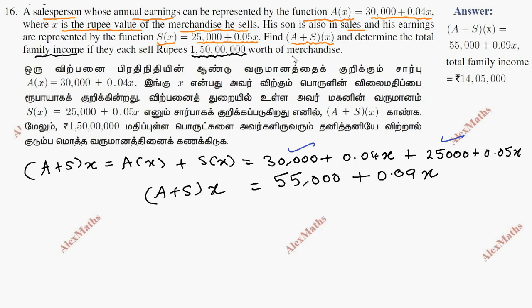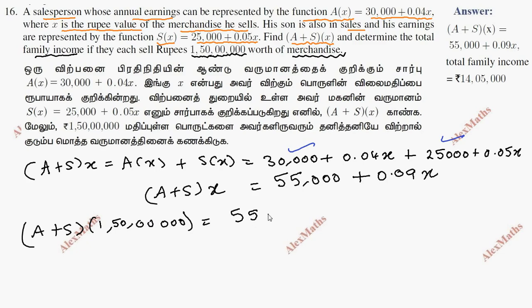Now substituting the value of merchandise. A plus S of 1,500,000. We will substitute it. So we get 55,000 plus 0.09 into 1,500,000.